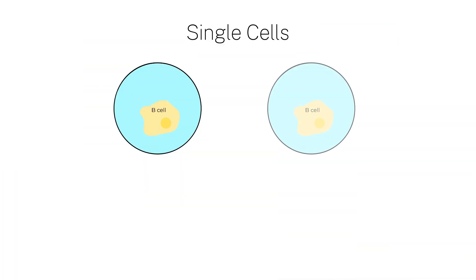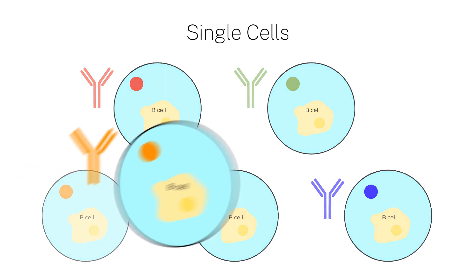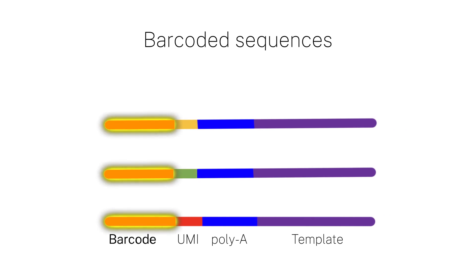Following sequencing, researchers can use the barcodes and UMIs for both quantitative and qualitative analyses. Because the barcode sequences are identical within a bead, they can identify which cell each sequence comes from. In the case of single-cell technologies for antibody discovery, this is the source B cell. Researchers also use barcodes in other sequencing methods to indicate the well within a plate. Barcodes help track what antibodies are expressed in different B cell populations or across samples.